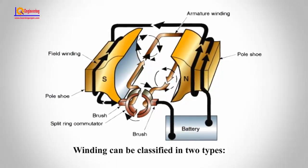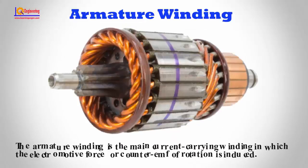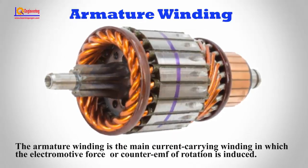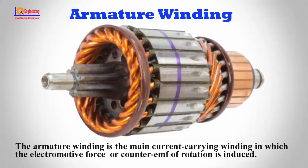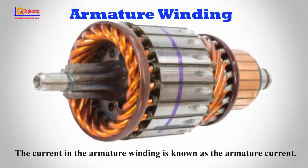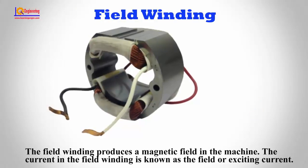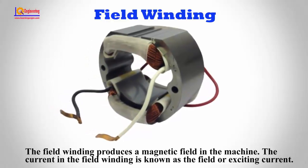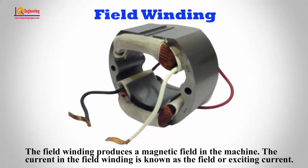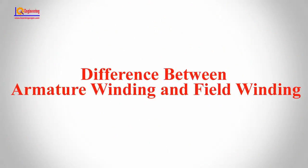Winding can be classified into two types: armature winding and field winding. The armature winding is the main current-carrying winding in which the electromagnetic force or counter-EMF of rotation is induced. The current in the armature winding is known as the armature current. The field winding produces a magnetic field in the machine. The current in the field winding is known as the field or exciting current. In this video, I will show you the difference between armature winding and field winding.